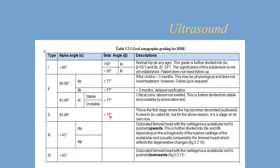Type D has an alpha angle similar to type 2C (between 43 and 50), but the beta angle is already above 77. In the initial modification, type D was included within type 2 as type 2D, but keeping it within type 2 would violate the definition since type 2 is centered and here the hip is not centered — the beta angle above 77 means the labrum is reaching the level of the turning point. Type 3 and type 4 both have an alpha angle less than 43; the difference is that the cartilaginous roof slopes upward in type 3 and horizontal or downward in type 4.